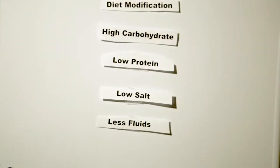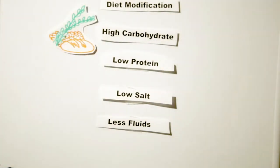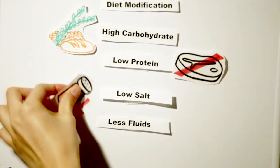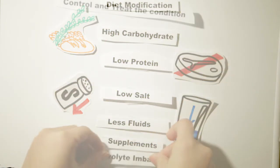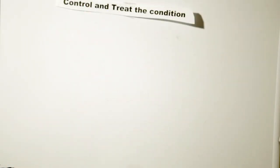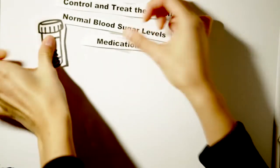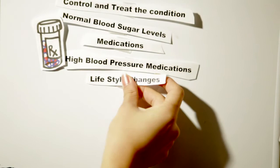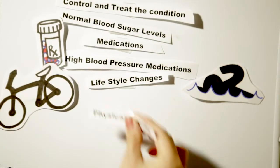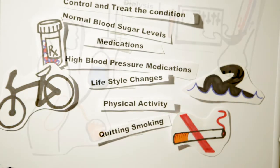Diet modification is the primary measure needed to prevent excessive workload on the kidneys. The patient should have a high carb, low protein, low salt diet with less fluids and supplements to help electrolyte balance. A normal blood sugar level should be maintained. Prescribed medications for high blood pressure should be taken. A change in lifestyle is also needed, including regular physical exercise and no smoking.